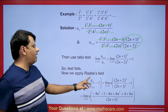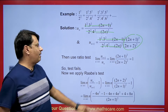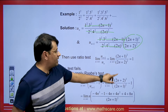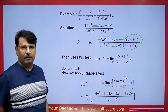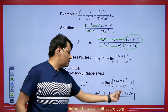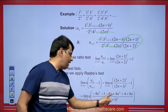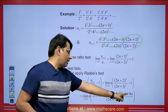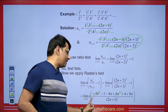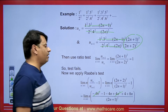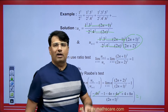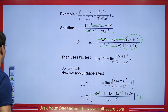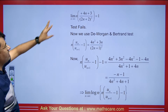The Rabbe test is: limit as n tends to infinity of n(U_N / U_{N+1} − 1). We will inverse U_{N+1}/U_N to get (2N+2)² / (2N−1)² minus 1, multiplied by N. We find the LCM, the highest degree terms cancel, and after taking N common, N² and N² cancel. When we check its limit, we get 1 — meaning the Rabbe test also fails.